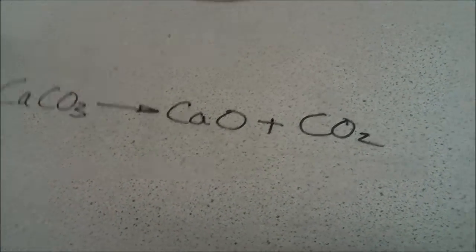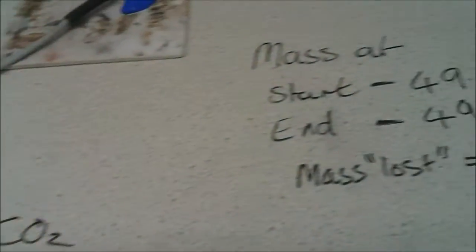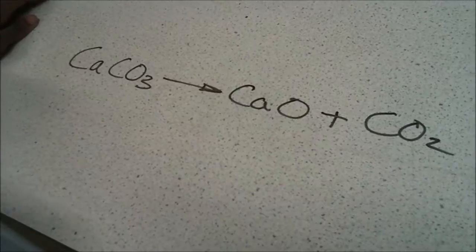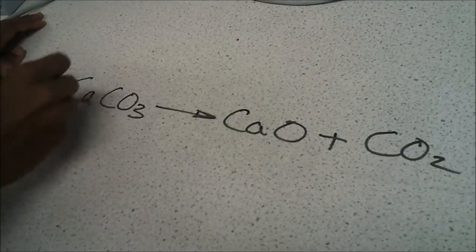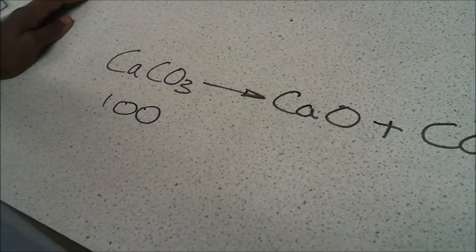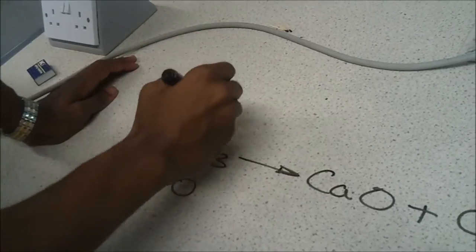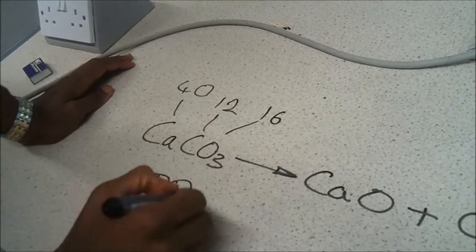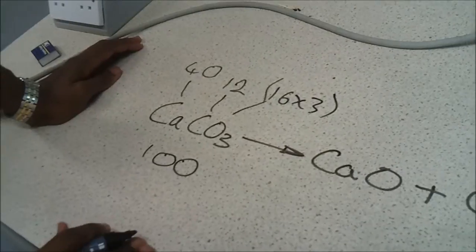And we can actually calculate how much has actually reacted. OK, so the relative atomic mass of calcium carbonate is actually 100. And we can work that out because calcium is 40 and carbon is 12 and oxygen is 16. Because there are three oxygens, you have to multiply that by three. And that gives us 100.